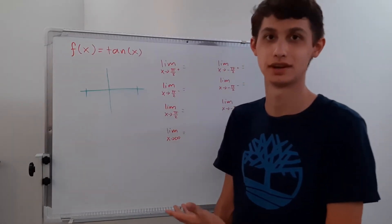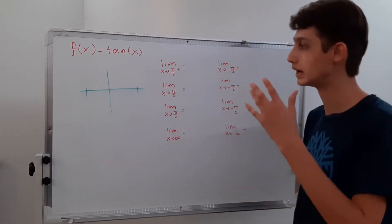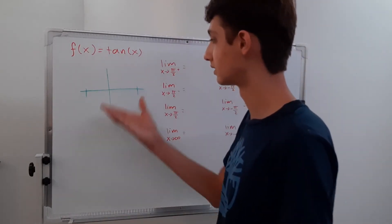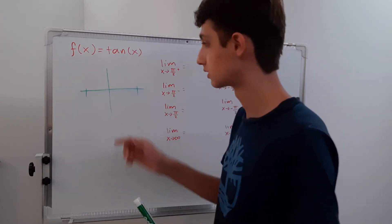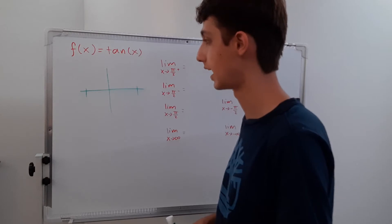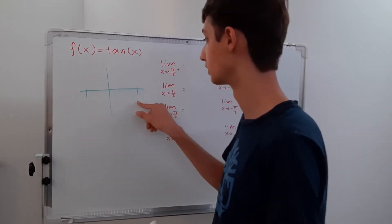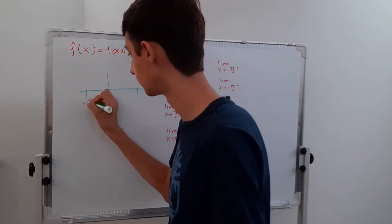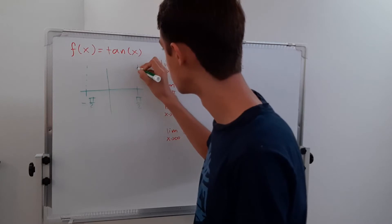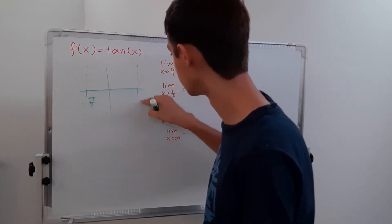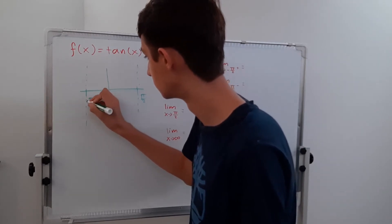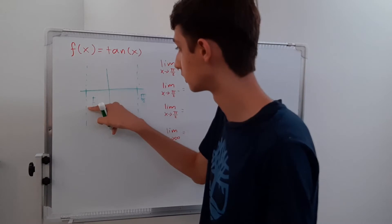Now we have to graph tangent of x and find all of these limits. It's really not that hard because some of these will get the same answer. Tangent of x looks like a snake, like an upward opening snake. It has its asymptotes at negative pi over two and pi over two. So we have negative pi over two and pi over two — let's just draw those asymptotes. These are our boundaries.